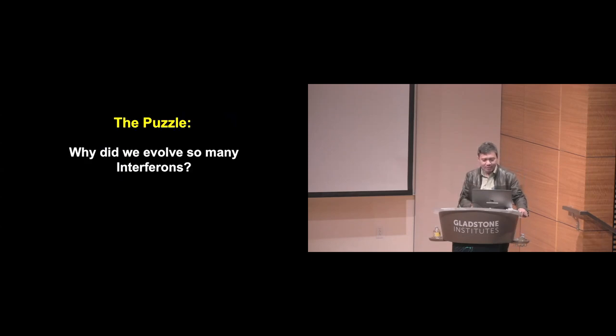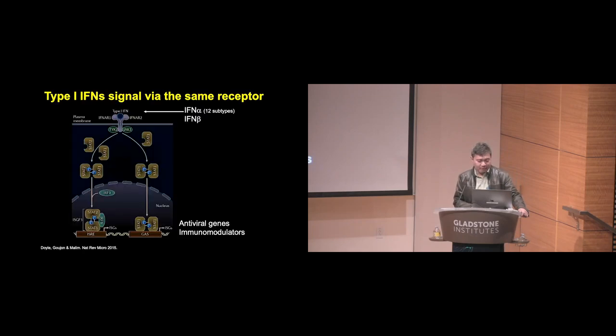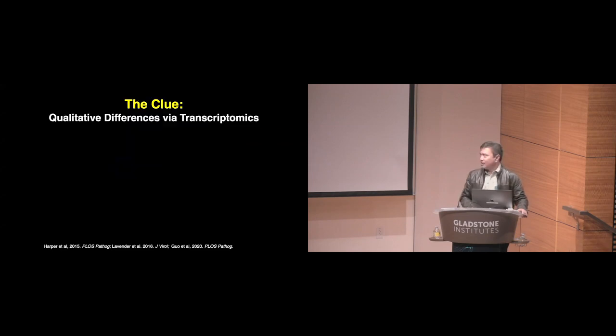Why do we have so many interferons? The puzzle becomes more confounding when you think that all type 1 interferons signal through the same receptor, trigger the same signaling pathway, and induce similar genes. One finding from Gideon Schreiber's lab showed that interferon alpha subtypes bind with different affinities to the receptor, and those binding differences lead to differential regulation of genes and differential restriction of viruses. That makes sense—it's quantitative differences. But it doesn't answer why you have weak interferons at all. Why can't they just all signal the same way? We thought maybe there are qualitative differences.